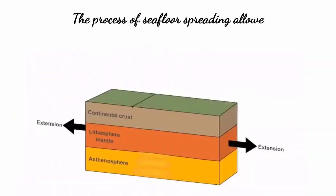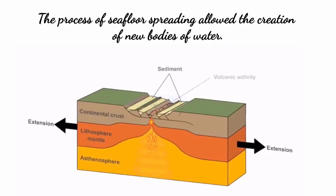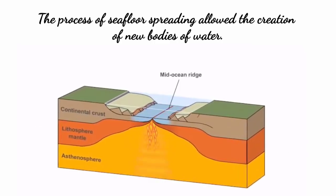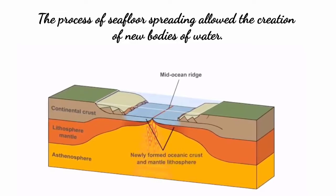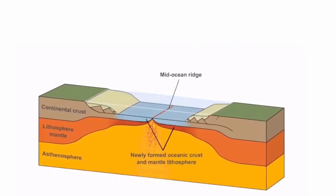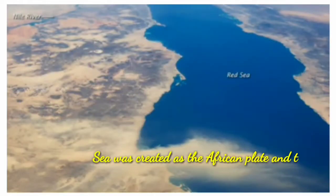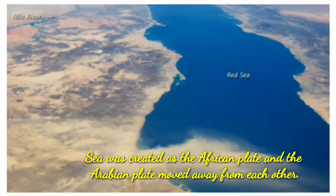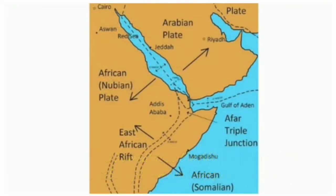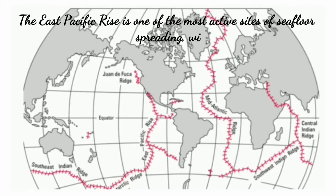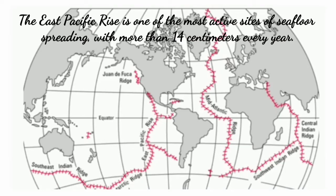The process of seafloor spreading allowed the creation of new bodies of water. For example, the Red Sea was created as the African plate and the Arabian plate moved away from each other. Seafloor spreading is also pulling the continents of Australia, South America, and Antarctica away from each other at the East Pacific Rise. The East Pacific Rise is one of the most active sites of seafloor spreading, with more than 14 cm of spreading every year.